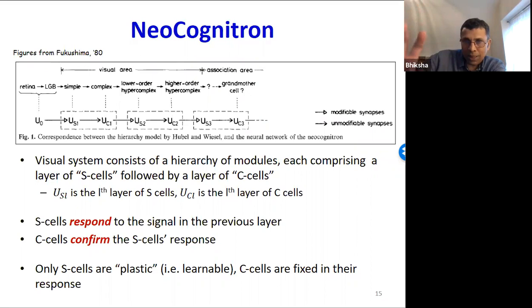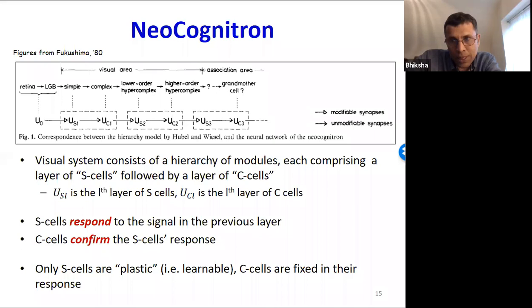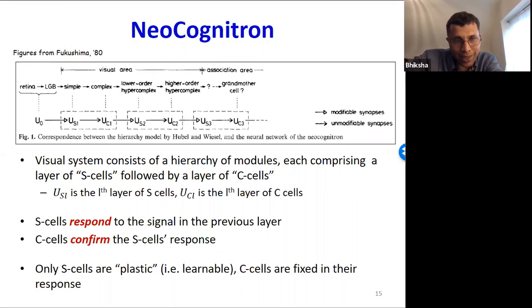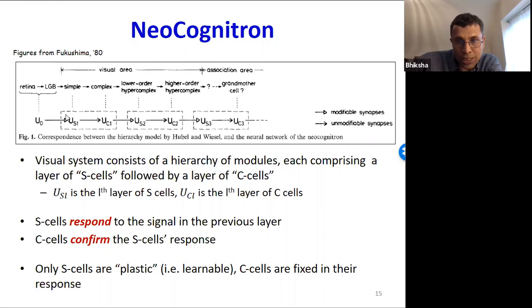He must have had a previous model called the cognitron, then updated it to the neocognitron. In his model, the visual system consists of a hierarchy of modules. Each module has two layers: a layer of S cells followed by a layer of C cells, with dotted lines showing the individual modules. The S cells correspond to Hubel and Wiesel's simple cells; the C cells correspond to their complex cells.